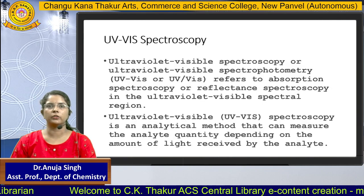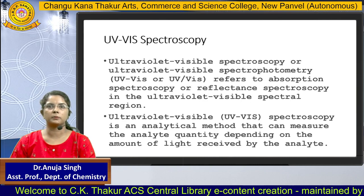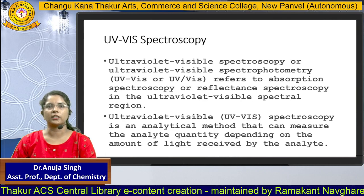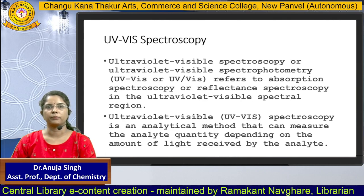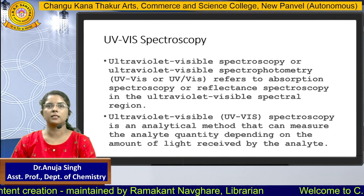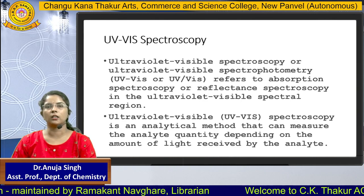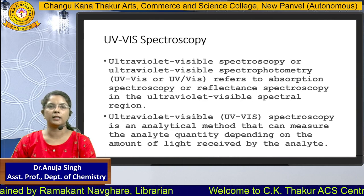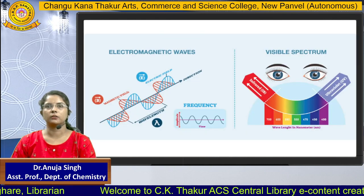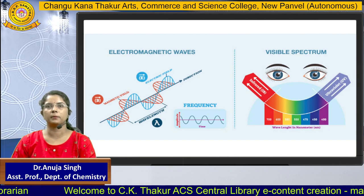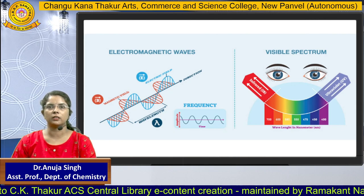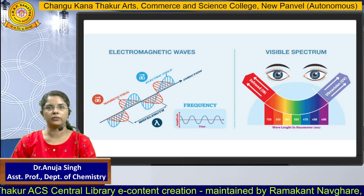Coming to the topic, UV Visible Spectroscopy is a branch of spectroscopy where we generally study the absorption or reflection in the UV visible spectral region. It is a method that can measure the analyte quantity depending on the amount of light received by the analyte. The visible spectrum ranges from 400 nanometers to 800 nanometers, covering all seven colors visible to our eyes.